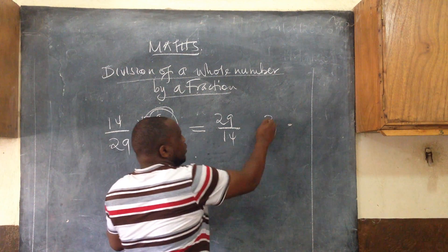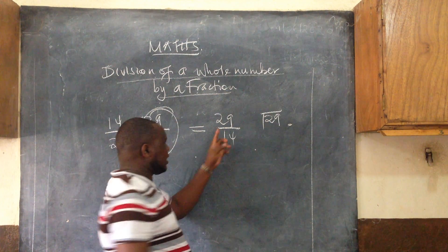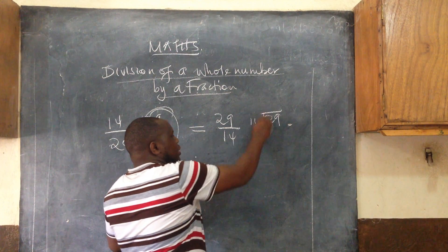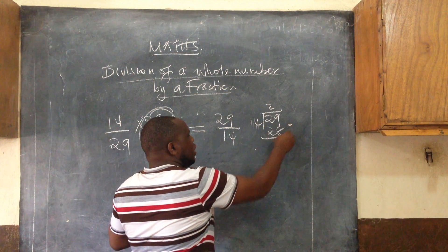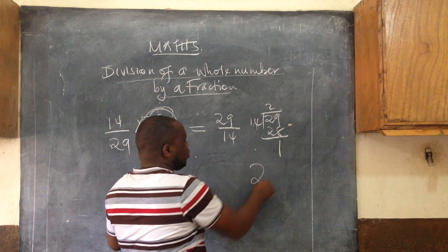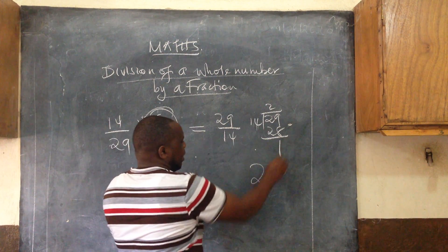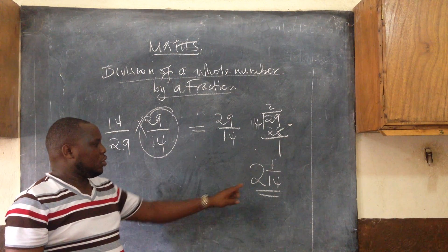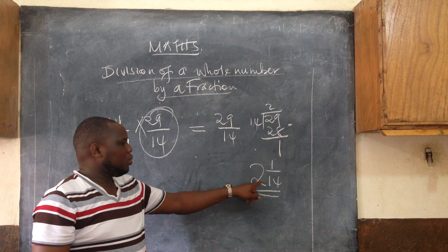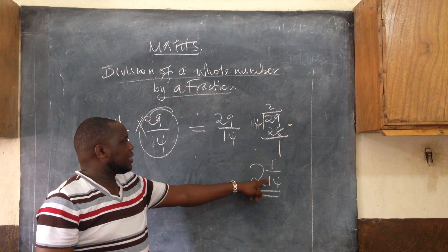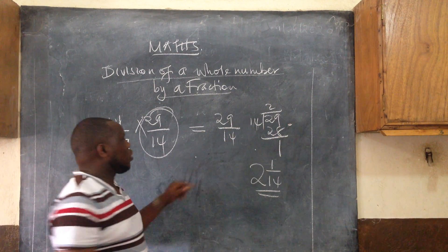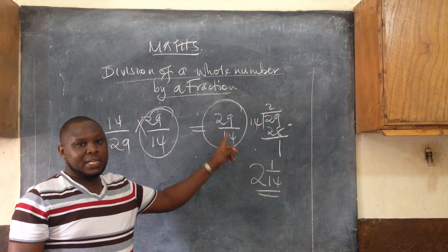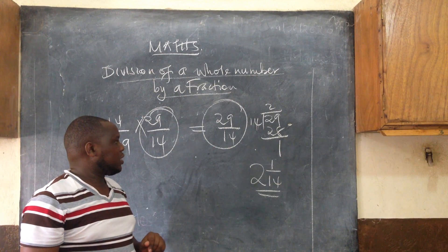After getting this, you divide because our numerator is bigger than the denominator. You divide two times to get 28, remain with one. Your answer will be 2 and 1/14. That becomes your reciprocal. When you change this into mixed fraction, you still get 29 over 14. Whenever you get a numerator that is bigger than the denominator, you must simplify to simplest form.